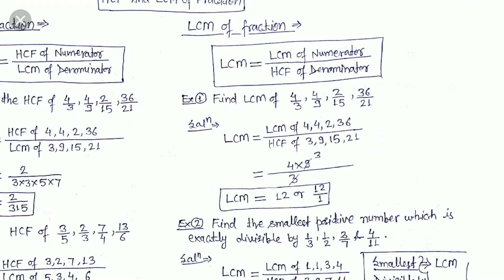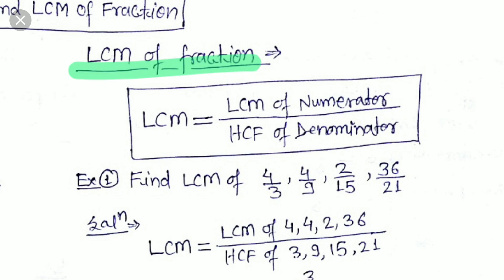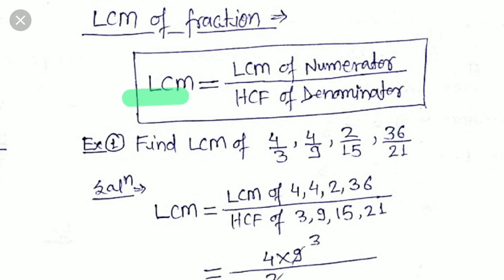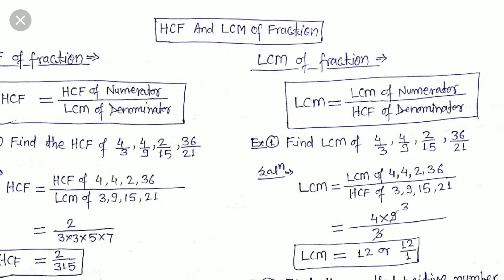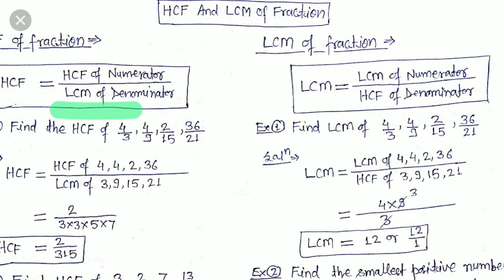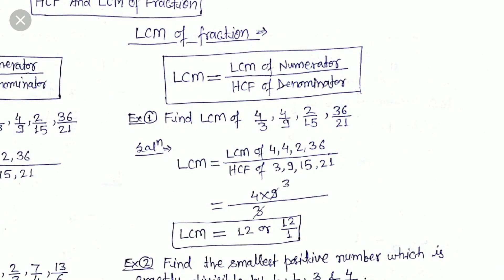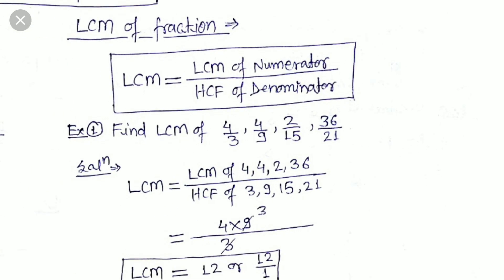This is the way to calculate the highest common factor of any fraction. Now we have to calculate the LCM of a fraction. LCM of fractions is calculated as LCM of numerators divided by HCF of denominators. As you have seen in the HCF formula, we used HCF of numerators and LCM of denominators — just reverse it to get LCM of fractions.